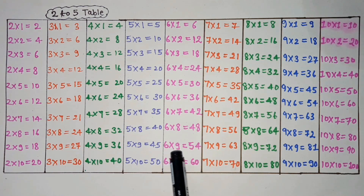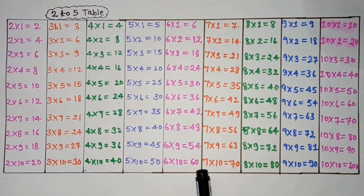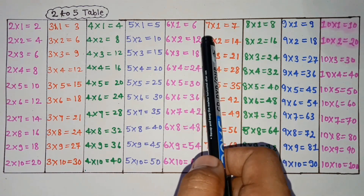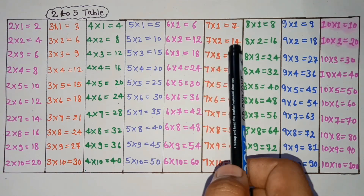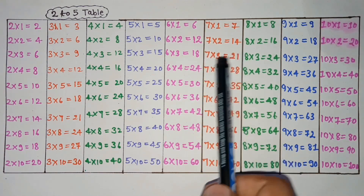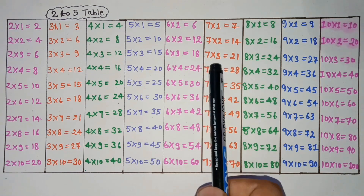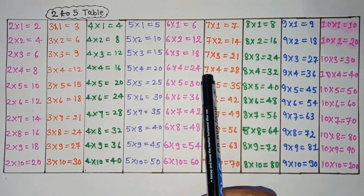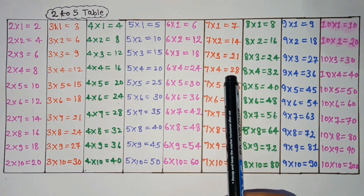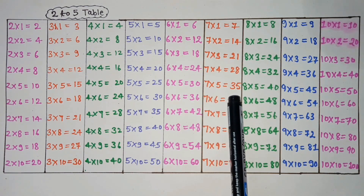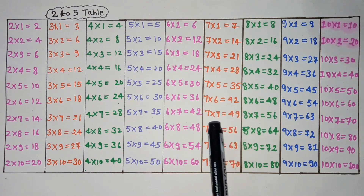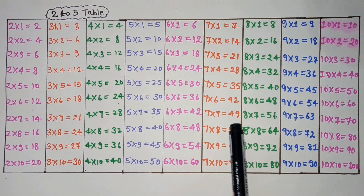6 nines are 54. 6 tens are 60. 7 ones are 7. 7 twos are 14. 7 threes are 21. 7 fours are 28. 7 fives are 35. 7 sixes are 42. 7 sevens are 49.